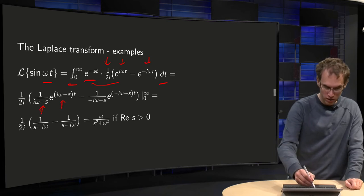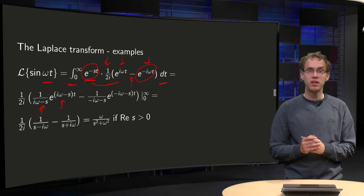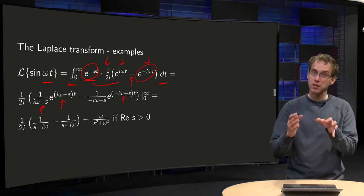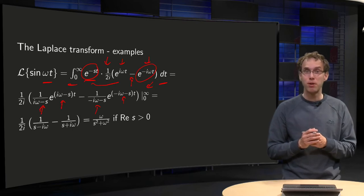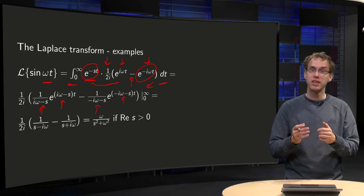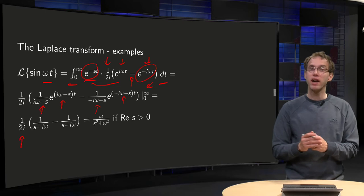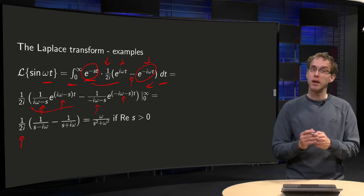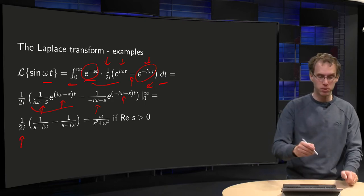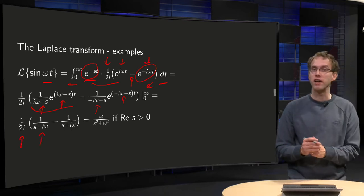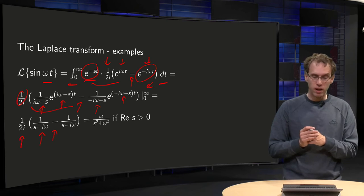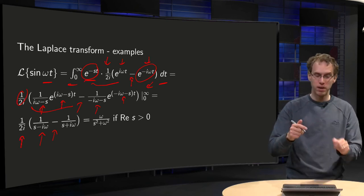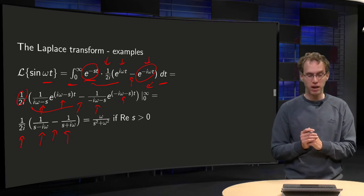For the other term you get a minus: e to the power minus st times e to the power minus iωt, giving e to the power minus(iω + s)t, divided by minus(iω + s). Evaluating between the two boundaries, and provided you take s appropriately, the contributions at the upper bound vanish. You only have contributions from the lower bound, so you keep your 1 over 2i. From the first part at the lower boundary you get 1 times 1 over (iω − s), with an additional minus sign. For the other term you get 1 over (s + iω).